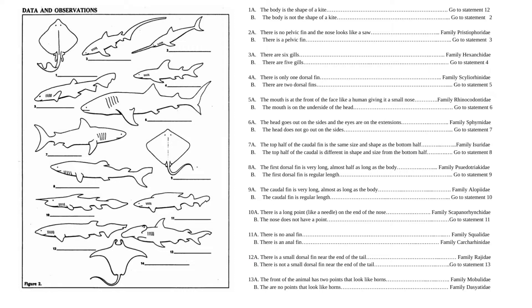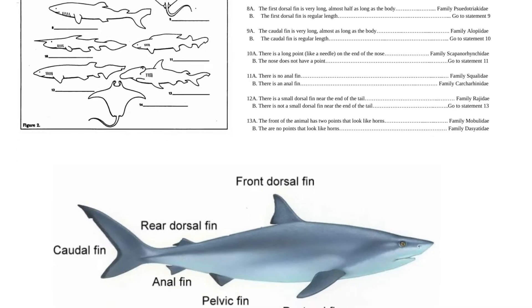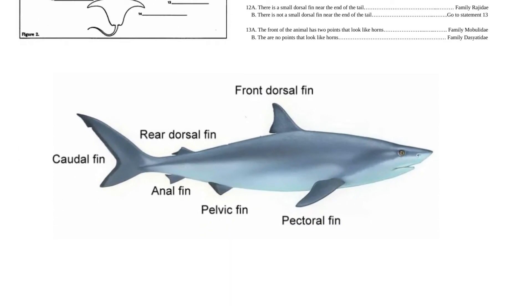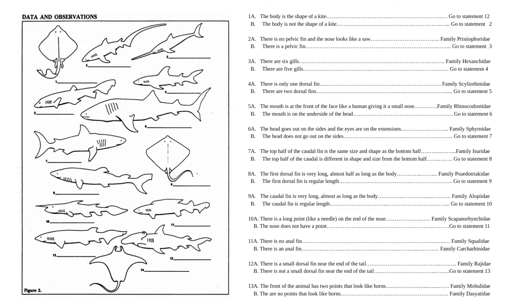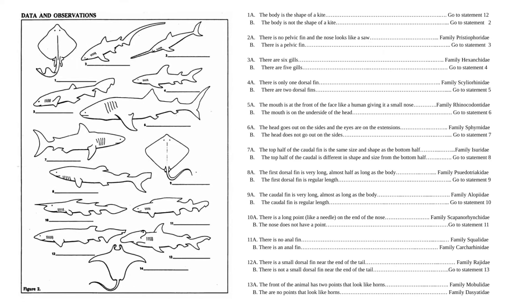12a says there is a small dorsal fin near the end of the tail. 12b says there is not a dorsal fin near the end of the tail. Well, here's the tail, and we do in fact have a dorsal fin there. And if you don't know what the fins of a shark are called, you will use this chart to help you out. So since it does have a dorsal fin, we know that this belongs to family Rajaday, and that's what you would write in the space.